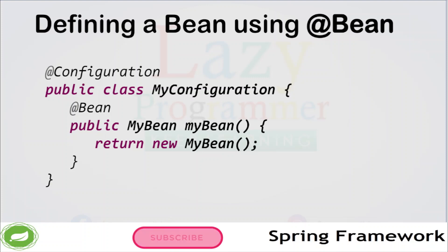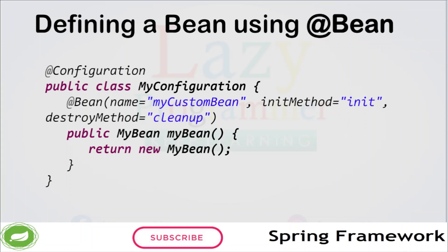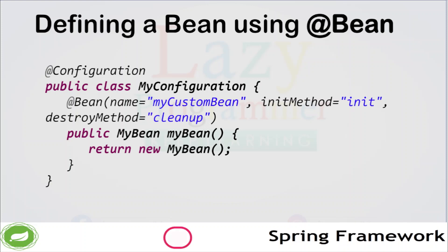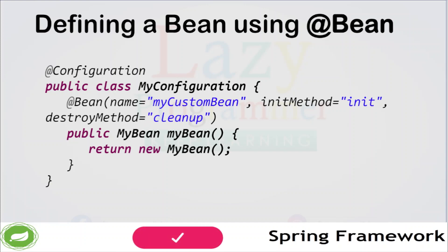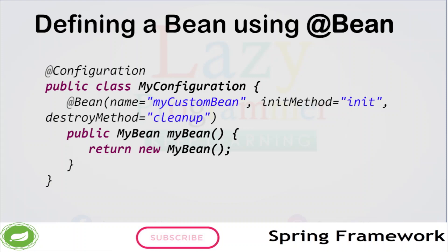We will also see the @Autowired annotation in action. The @Bean annotation can also be used to customize the configuration of the Bean. For example, you can use the name attribute to specify the name of the Bean, the initMethod attribute to specify a method to be called after the Bean is created, and the destroyMethod attribute to specify a method to be called when the Bean is destroyed. In this example, the myBean method is annotated with @Bean and will return the instance of myBean. The Bean will be named myCustomBean, and the init and cleanup methods will be called when the Bean is created and destroyed respectively.